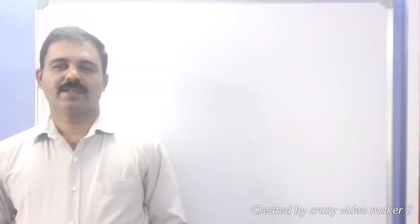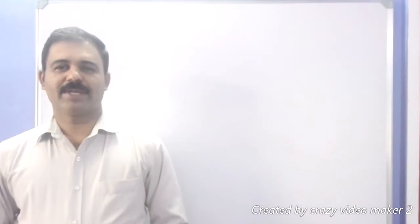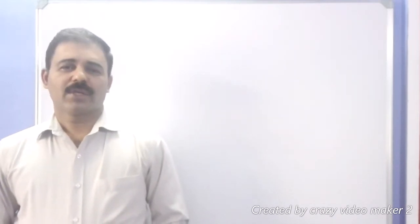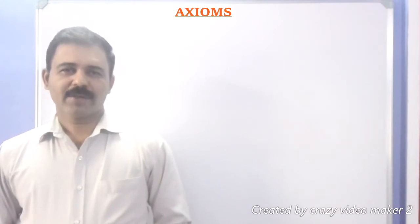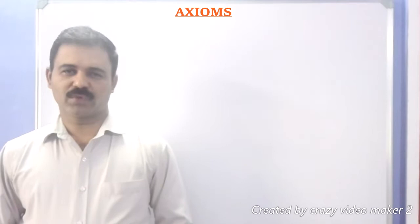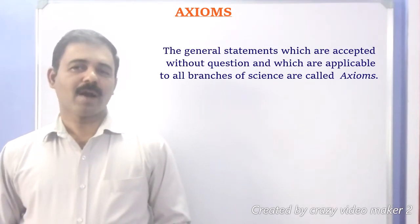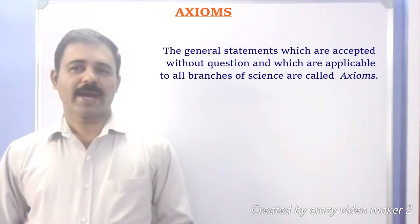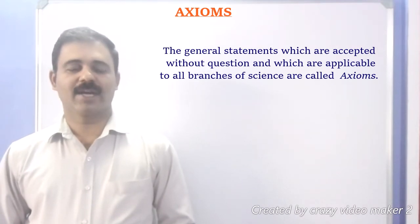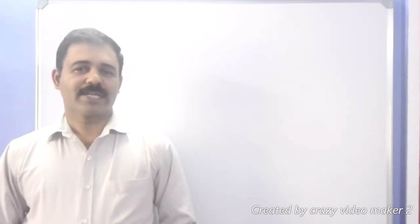Dear student, in the previous class we learnt about undefined terms of Euclid geometry. In this class we will study about Euclid axioms and postulates. Axiom means the general statements or common notions which are accepted without question or without any proof, and which are applicable to all branches of science. Now some of the Euclid axioms are given here.